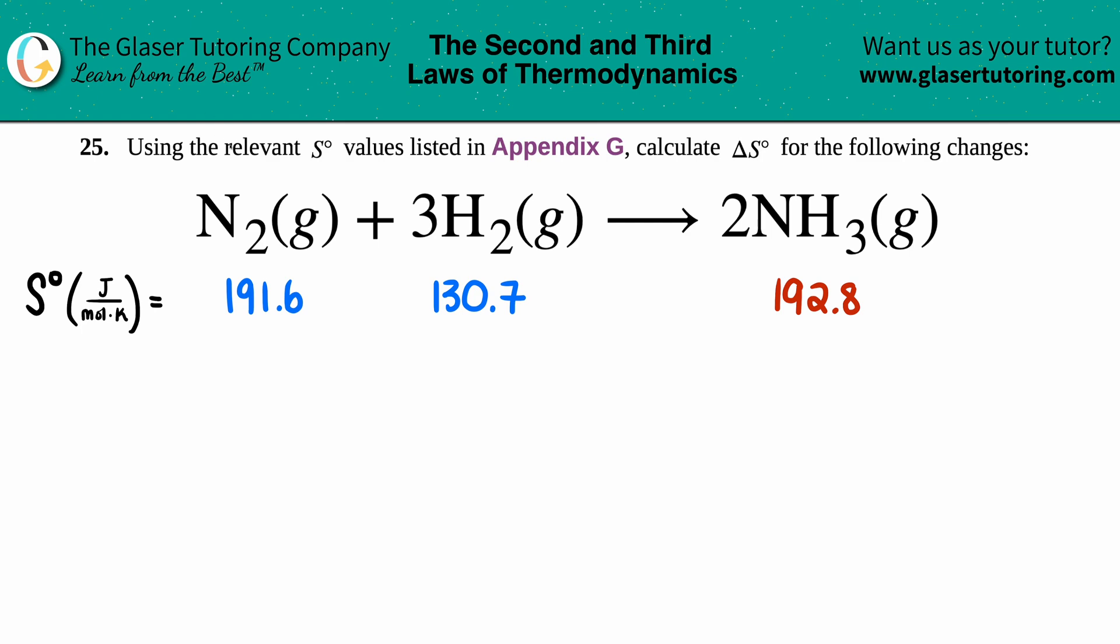Number 25: Using the relevant S values listed in Appendix G, calculate the delta S naught for the following changes. We have this balanced equation: N2 gas plus 3H2 gas yields 2NH3 gas.